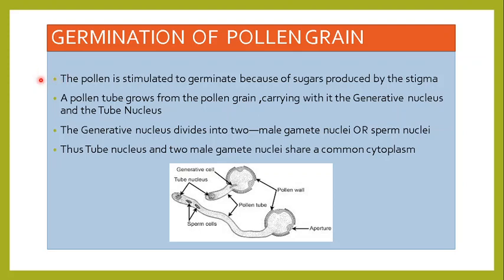Now we come to the germination of the pollen grain. The pollen is stimulated to germinate because of the sugars produced by the stigma. Once the pollen falls on the stigma of the same species, the stigma produces certain sugars that help the pollen to germinate and grow further. A pollen tube grows from the pollen grain, carrying two nuclei — the generative nucleus and the tube nucleus. The generative nucleus then divides into two male gamete nuclei, also known as sperm nuclei.